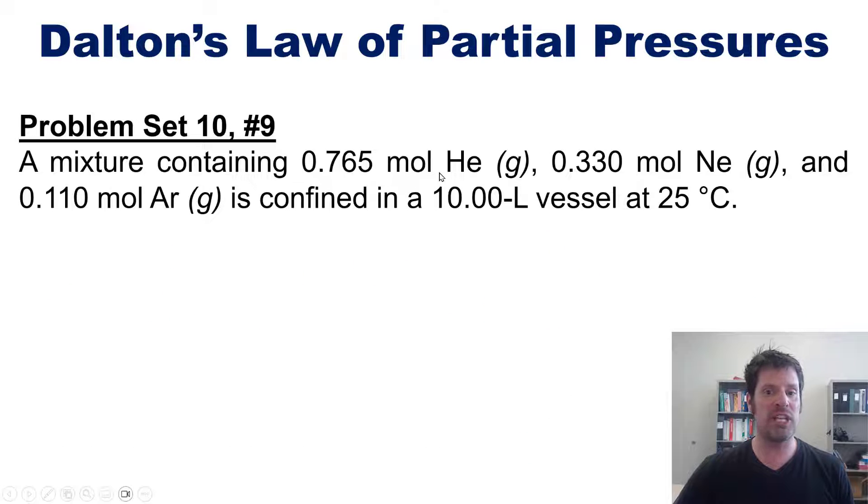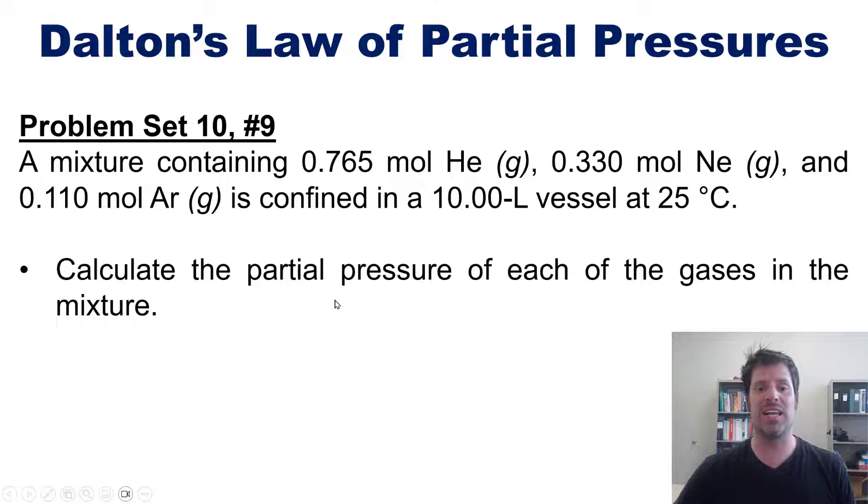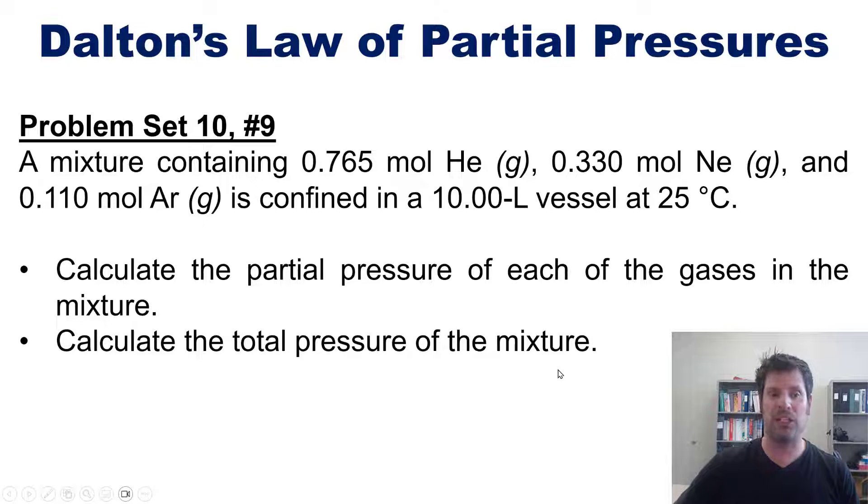A mixture of that many moles helium, this many moles neon, and this many moles argon is confined to a 10 liter vessel at this temperature. I want you to calculate the partial pressure of each of these gases in the mixture, then calculate the total pressure of the mixture. As per usual, I'm not going to solve this here, but I will post a link in the description below to a separate video in which I will.